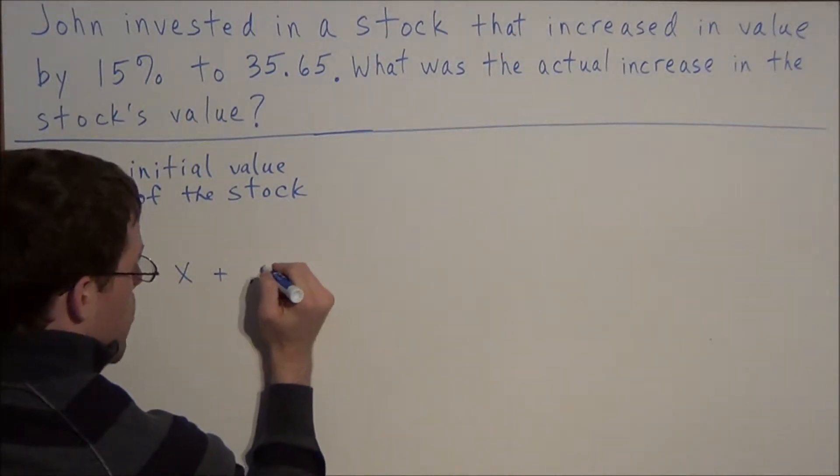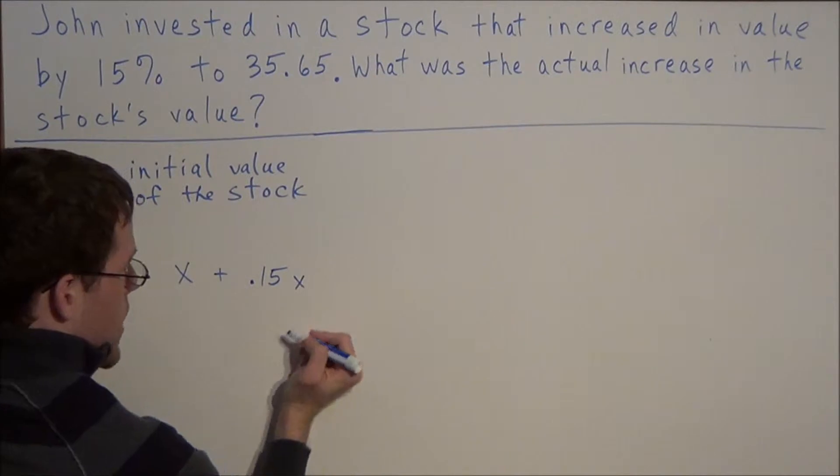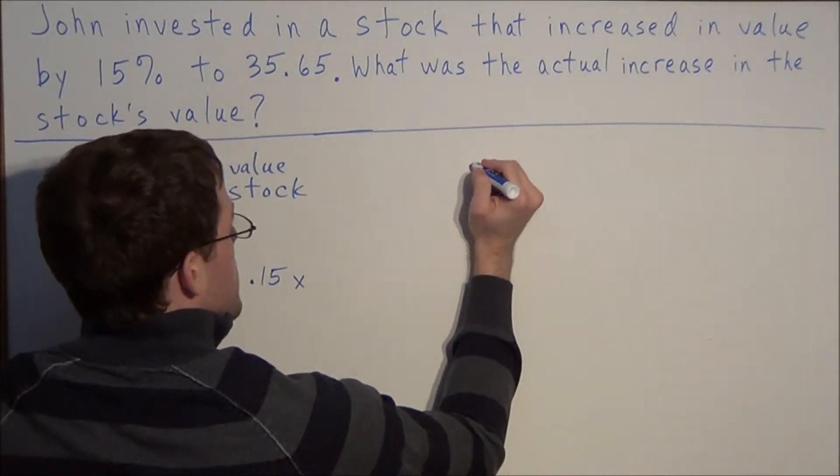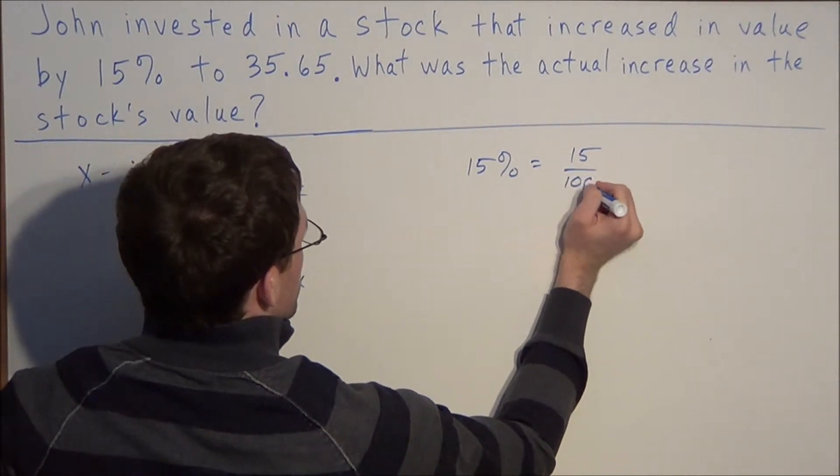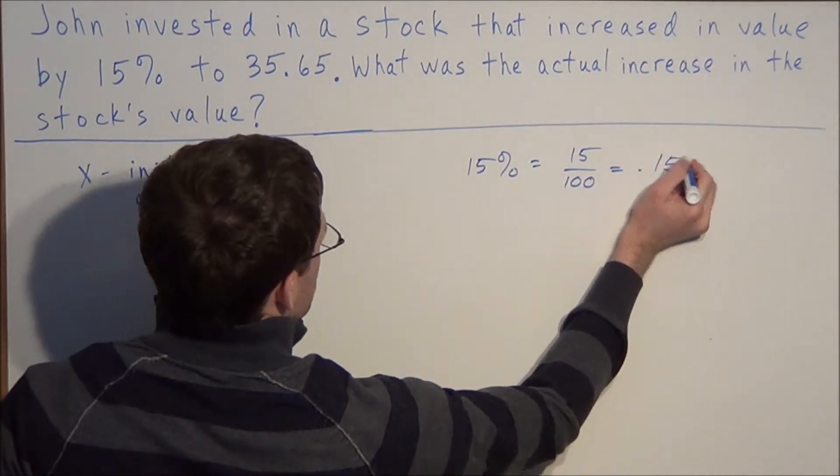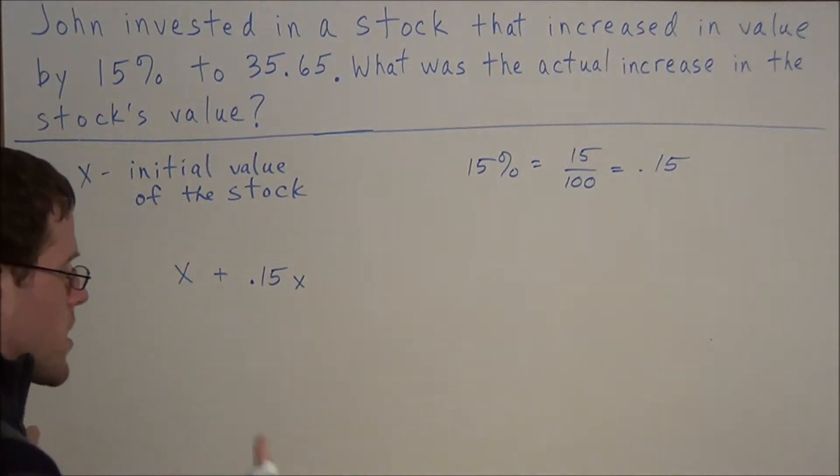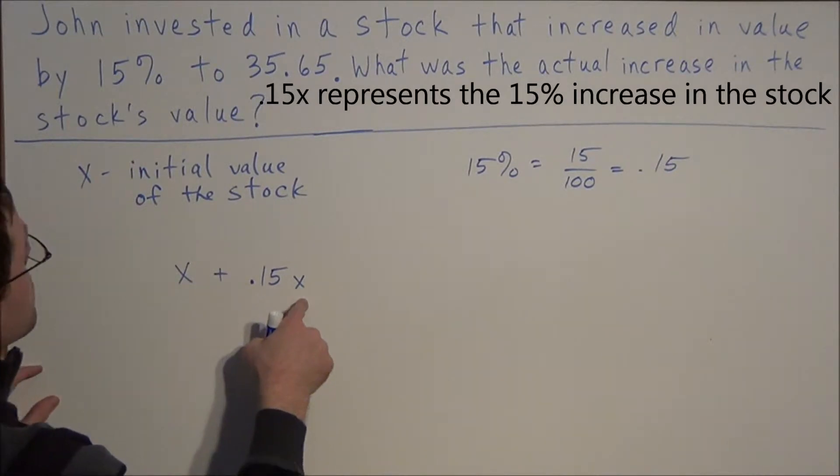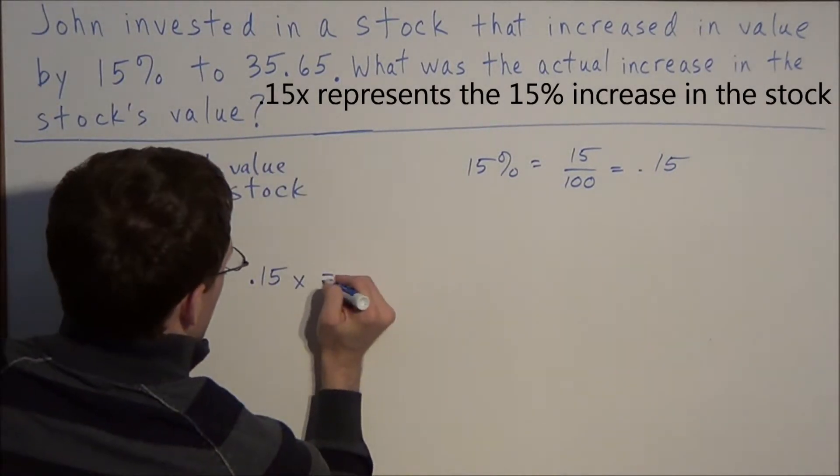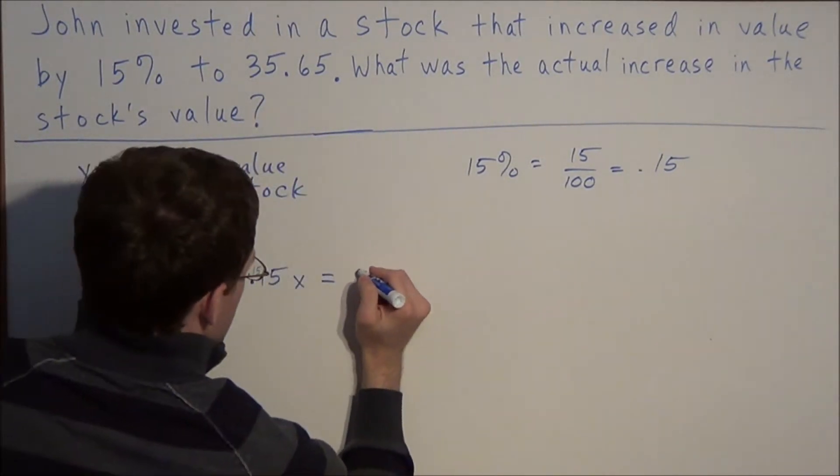we could write it as 0.15 times X. Because remember, 15% can be represented by 15 over 100, which translates to 0.15. So we're going to use the decimal form so that the algebra becomes easier. The initial value plus the increase in value results in 35.65.